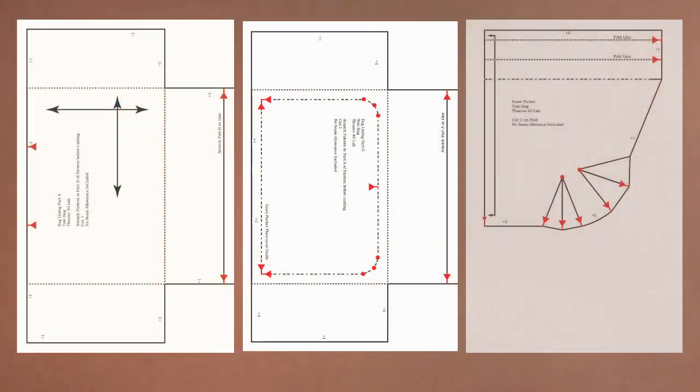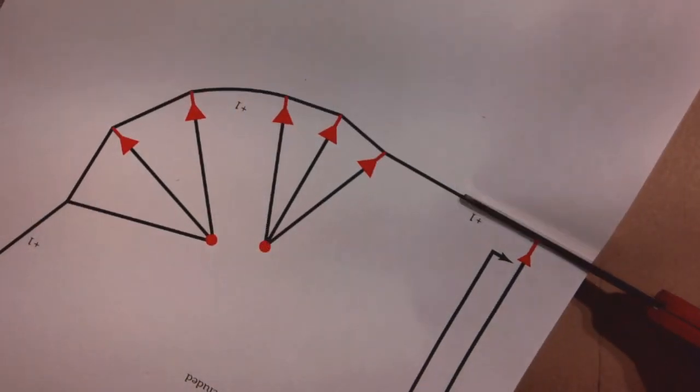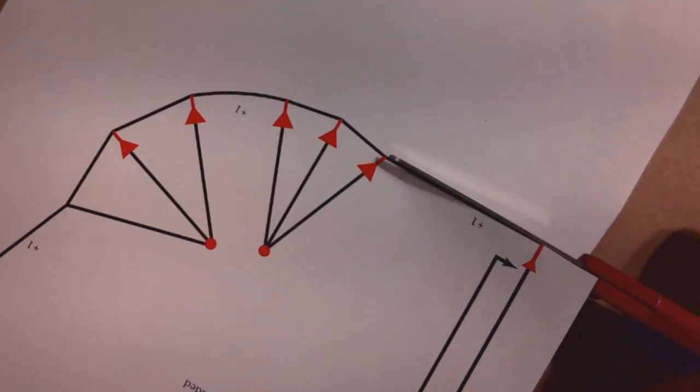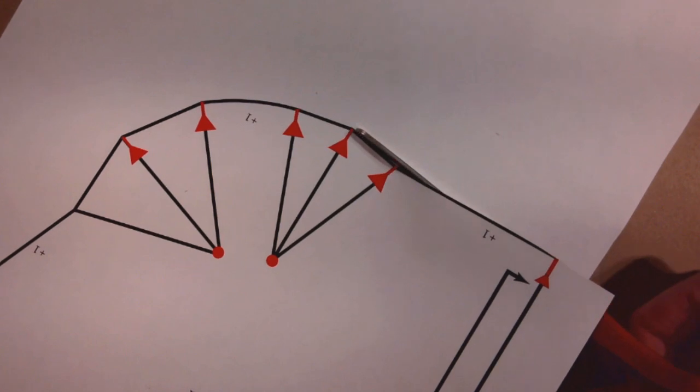The tote bag lining part A, tote bag lining part B, and the inner pocket pattern pieces need to be cut out. Using paper scissors, carefully cut along the outer edge of each piece. Cut as straight and accurately as possible.